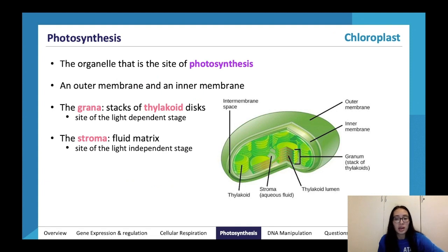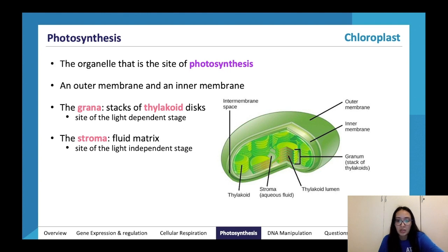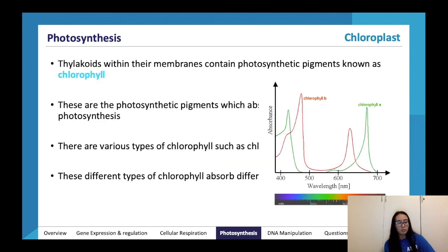A chloroplast is an organelle which is the site of photosynthesis — it's a double membrane-bound organelle. Within the chloroplast you have grana, which are stacks of thylakoid discs — this is the site of the light-dependent stage. The stroma is the fluid-filled space around the thylakoid stacks and is the site of the light-independent stage. Thylakoid membranes contain the photosynthetic pigments known as chlorophyll, which absorb light.